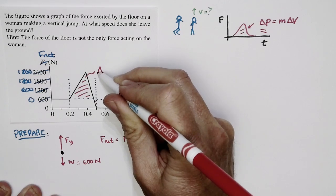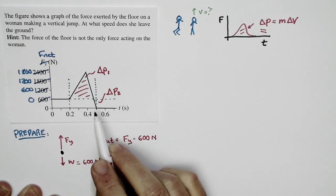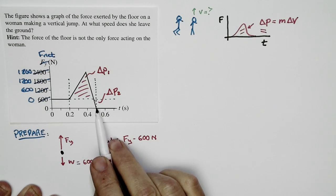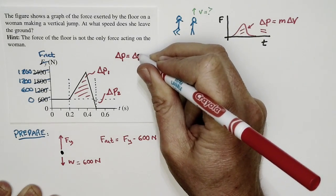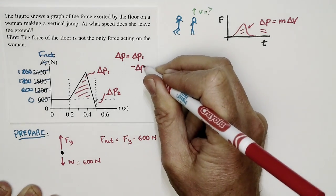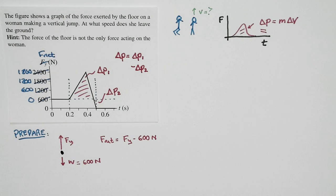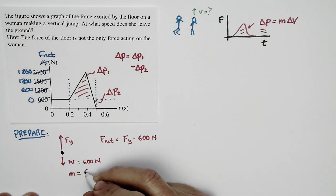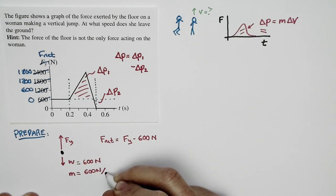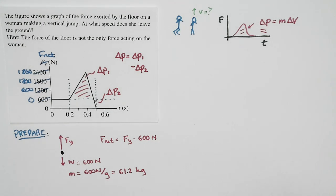We can look at delta P1 for the positive segment and delta P2 for the negative segment. During the negative segment, the upward force of the floor is less than her weight, so she's actually slowing down. The total change in momentum equals delta P1 minus delta P2 — the area of the first triangle minus the area of the second triangle. Also, if the woman's weight is 600 Newtons, her mass equals weight divided by g, which is 61.2 kilograms. We'll keep an extra significant figure since this is an intermediate step.